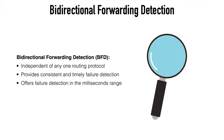Bi-directional forwarding detection or BFD is protocol independent, meaning that we can use it with all kinds of different routing protocols such as EIGRP, OSPF, and BGP. This gives us a more uniform failure detection mechanism. We know that those routing protocols have various hello and keep-alive mechanisms with varying timer rates, so BFD is a way that we can have a more consistent failure detection.